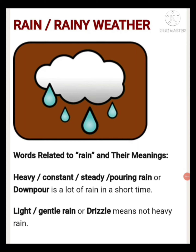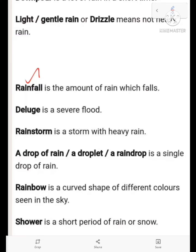Words related to rain and their meanings: Heavy rain means heavy, constant, steady, or pouring rain. Downpour means a lot of rain in a short time — heavy, constant, steady, or pouring rain within a short duration. Light rain or gentle rain — drizzle means not heavy rain, just drizzling. Rainfall is the amount of rain which falls. Deluge is nothing but a severe flood.